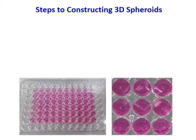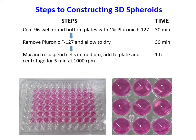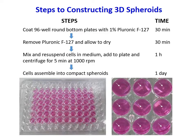We developed a method to form uniform and highly reproducible 3D spheroids. First, we coat a layer of Pluronic F127 in 96-well round bottom plates. Pluronic is a non-ionic surfactant that is non-toxic to the cells and lowers unspecific cell and protein adhesion to the plate. The cells are then mixed and resuspended before addition to the plate, and they will come together and assemble into compact spheroids within a day.